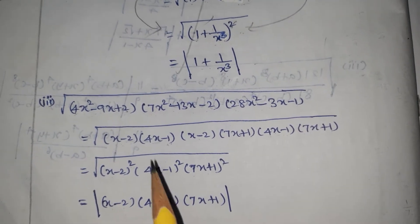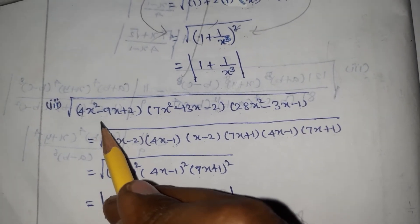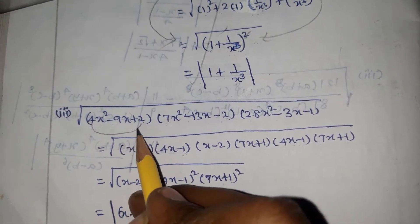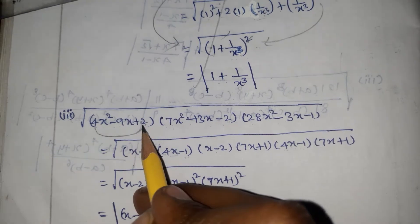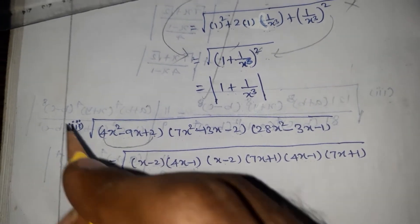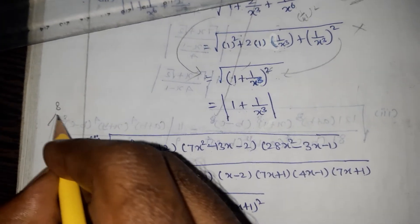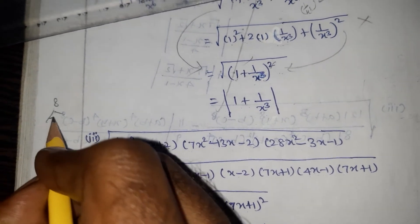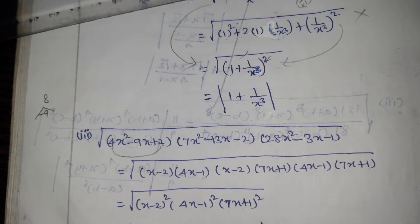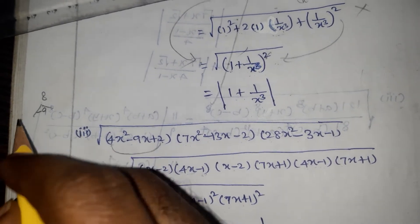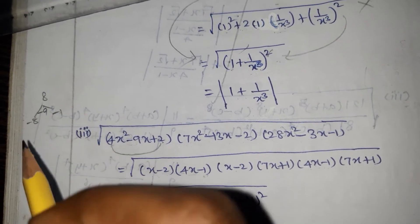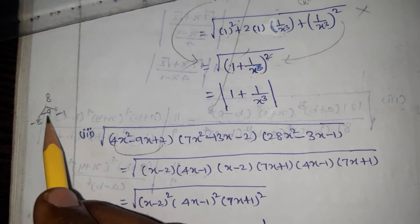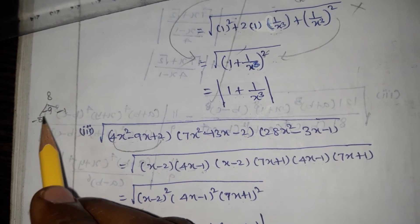Next, we take factorization. For the first term 4x squared minus 9x plus 2: the product of the first term coefficient and constant term is 4 times 2 equals 8. The middle coefficient is minus 9, so we need two numbers with product 8 and sum minus 9, which gives minus 8 and minus 1.